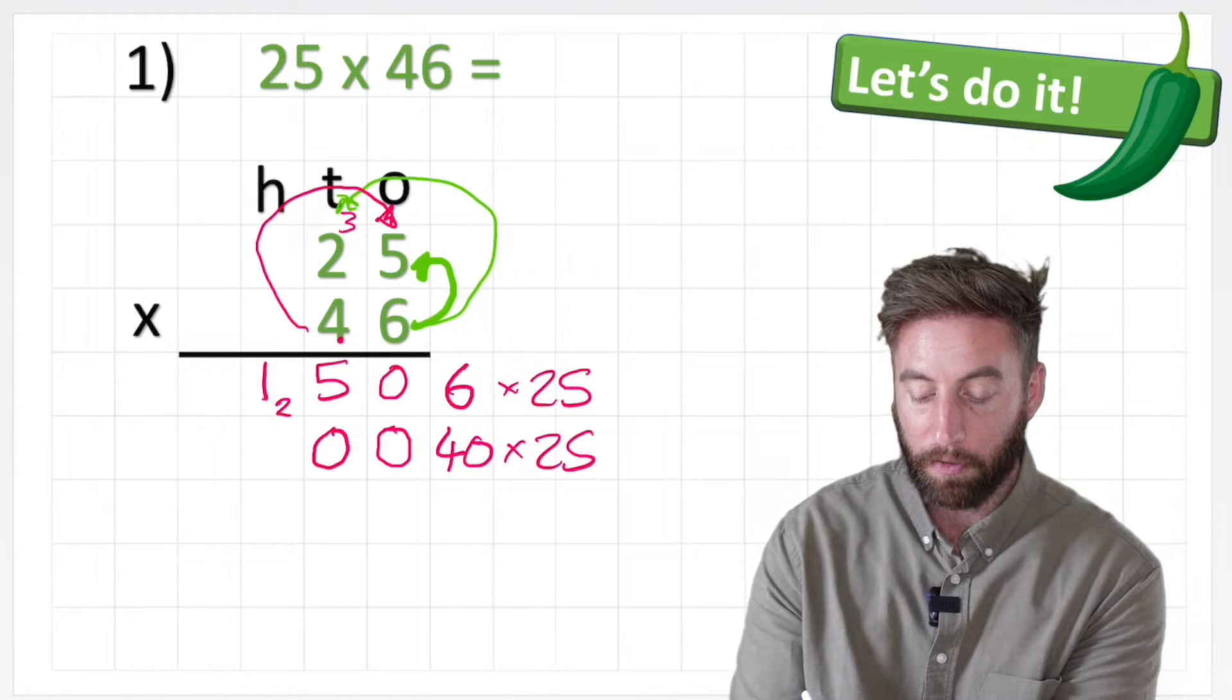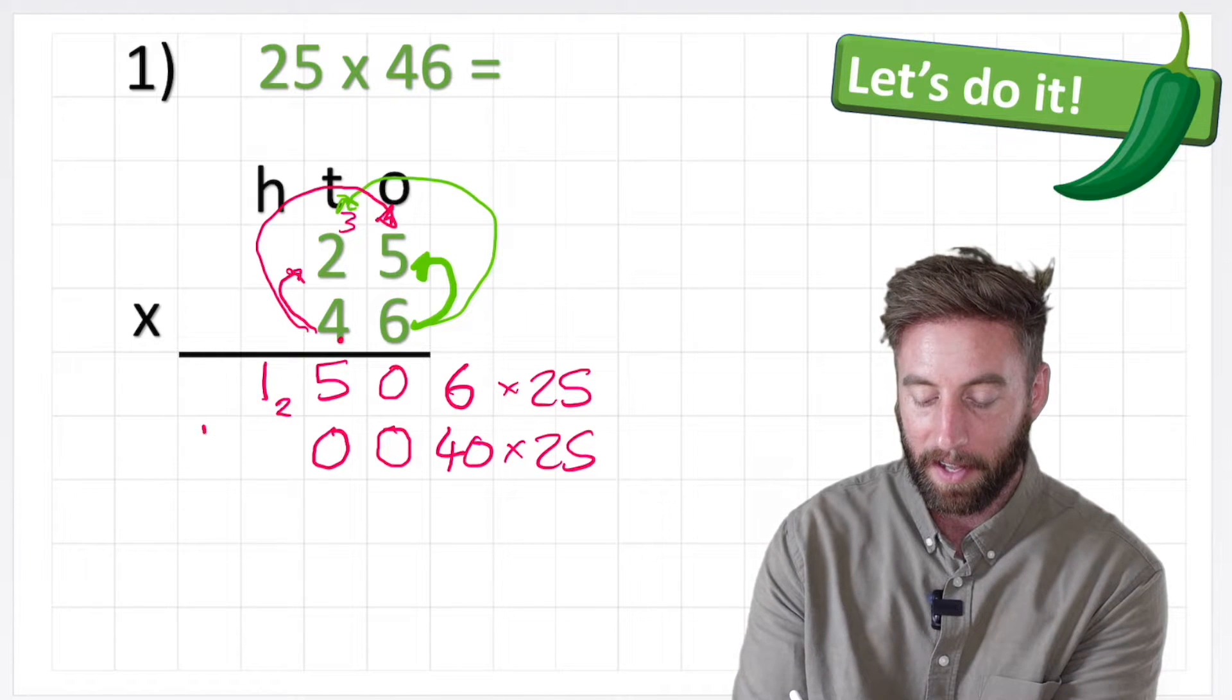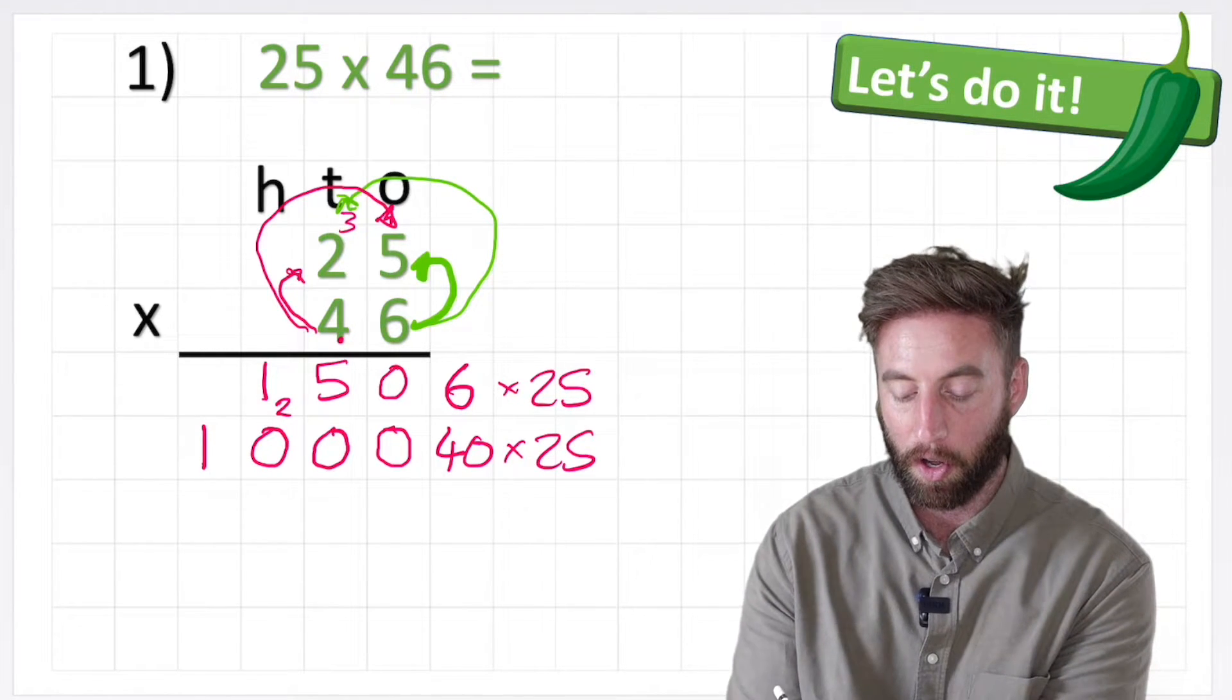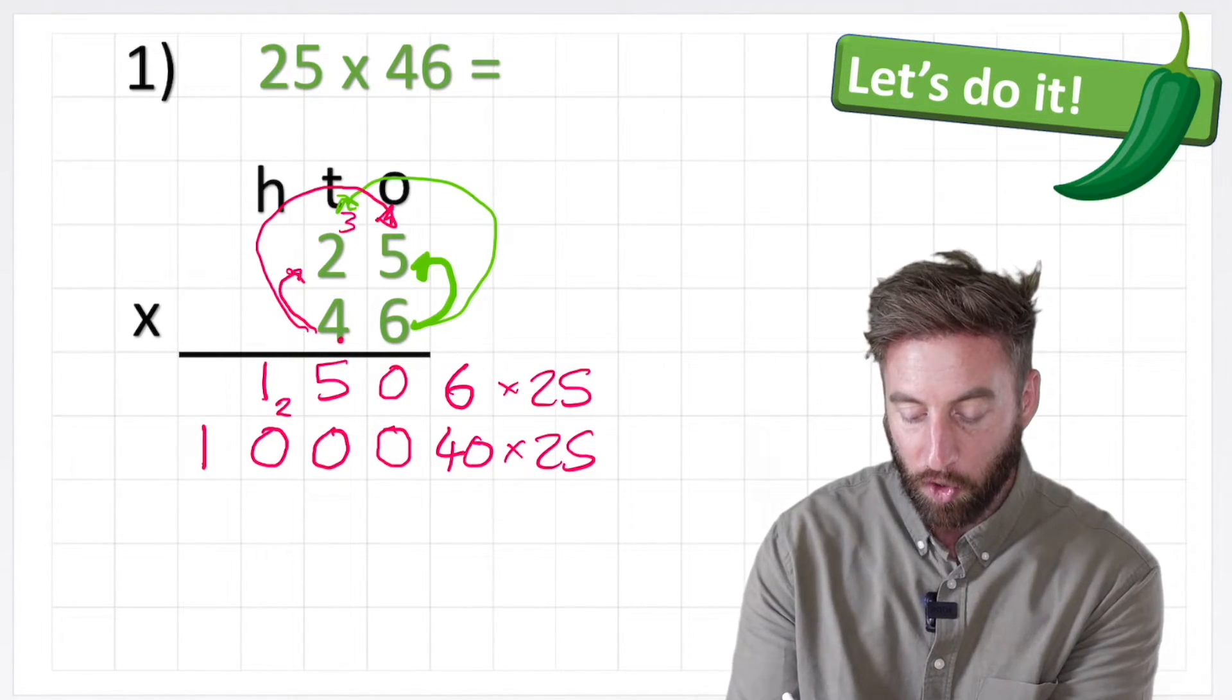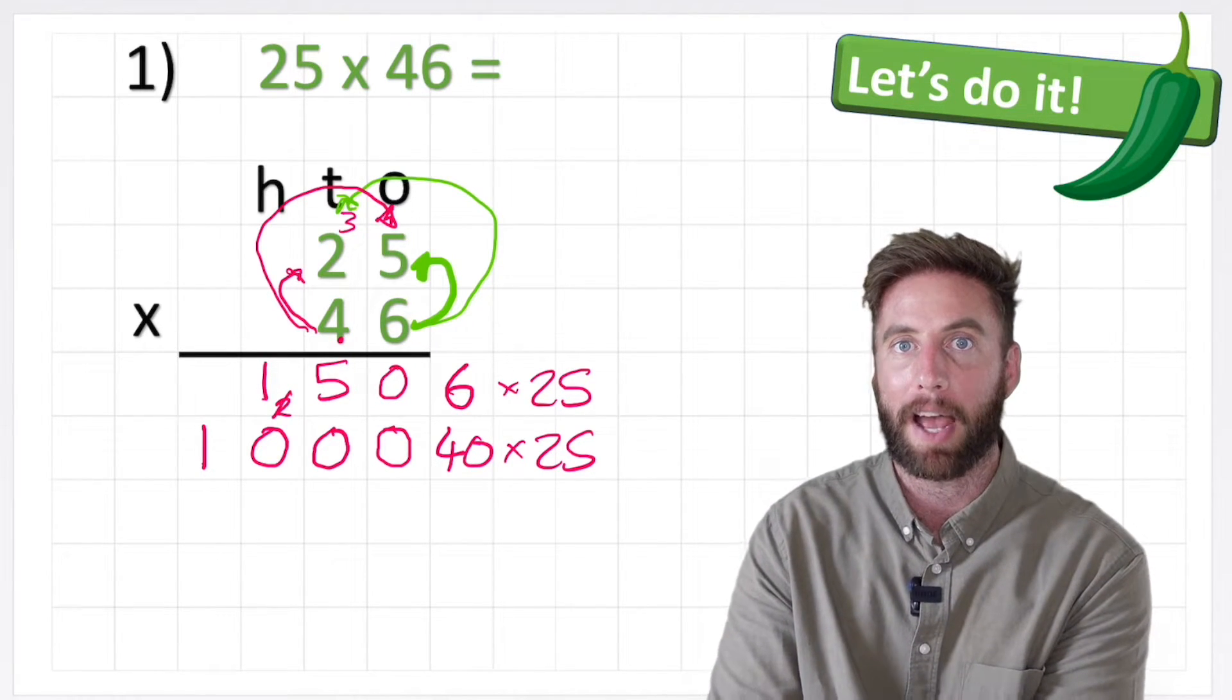Last but not least, I'm going to do 4 times 2. 4 times 2 is 8 plus my 2 is 10. Put the 10 in the answer column. Now a little tip at this point, make sure you cross out this 2 because we have used it, so we don't want to add it to our answer by accident in a moment.